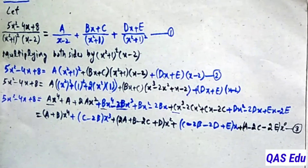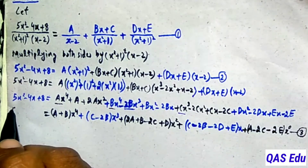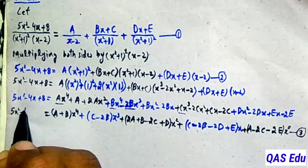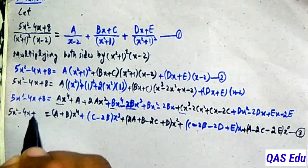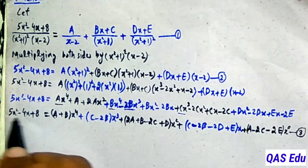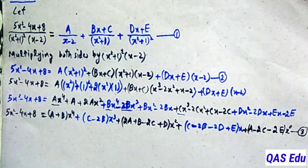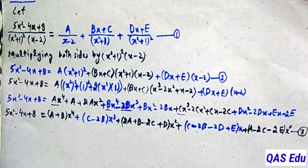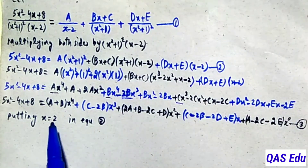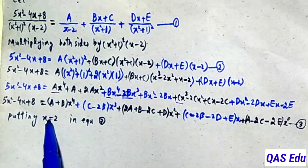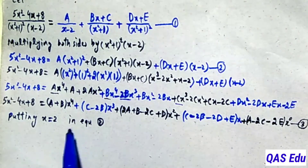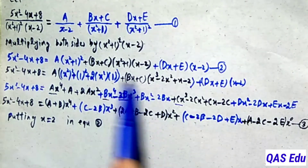From equation number 3, we can find the constants A, B, C, D, E. First, we put x equal to 2 in equation number 2. This will help us find the value of A directly by substitution.